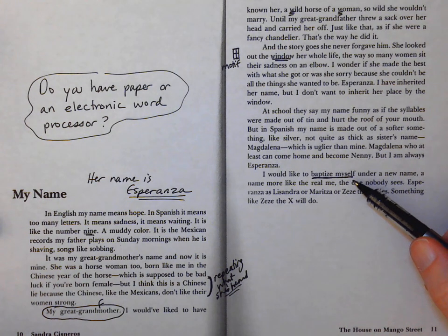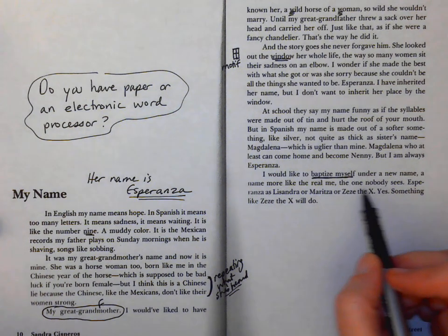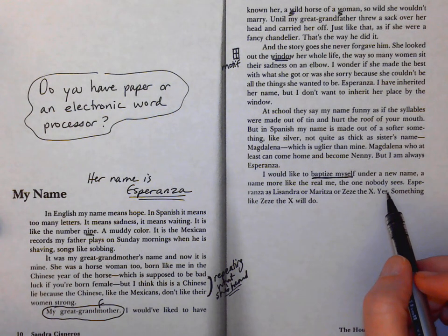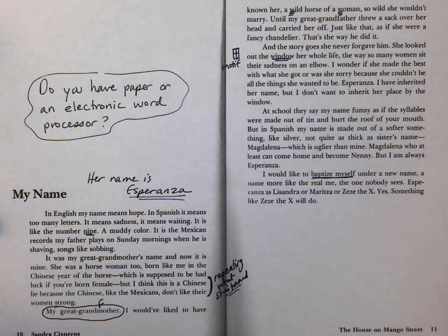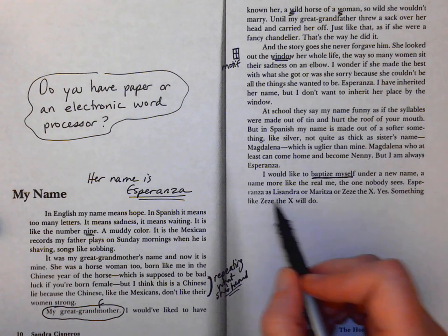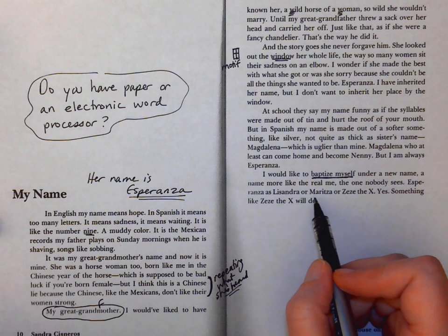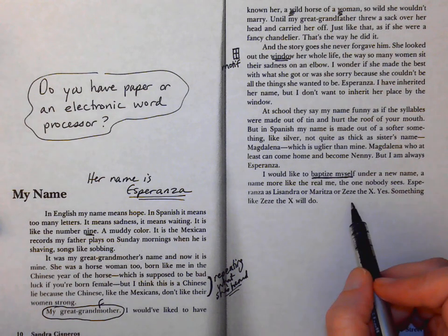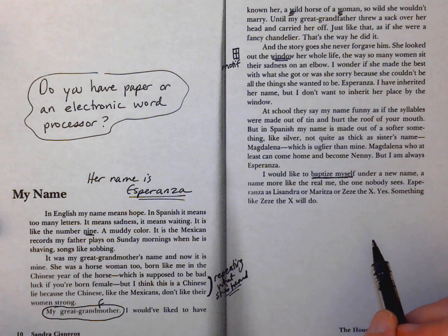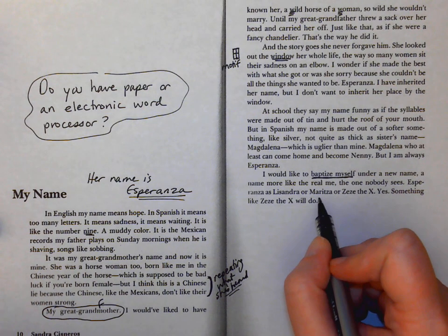Children so often looking for their identity, and she sees herself as wanting not only just to change her name but almost a rebirth into a new identity. A name more like the real me, the one nobody sees. I can understand that. You know, what if your name doesn't really reflect who you are? And here's what she decides she wants her name to be: Esperanza as Lissandra or Maritza or Zezé the X.